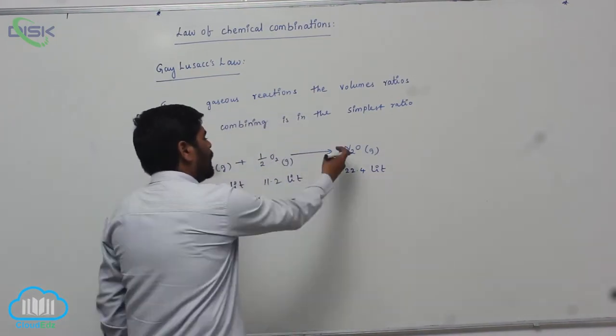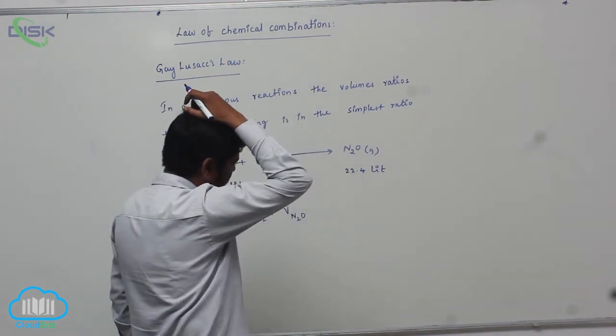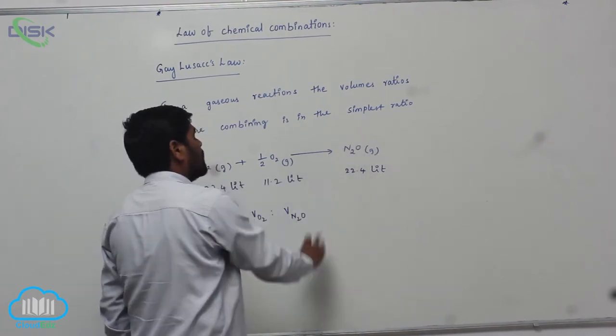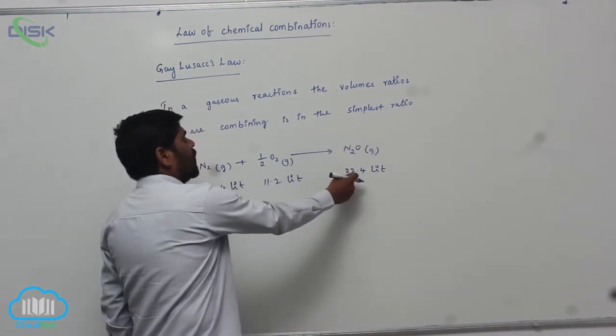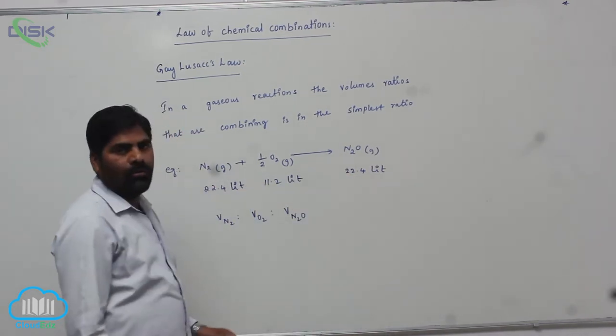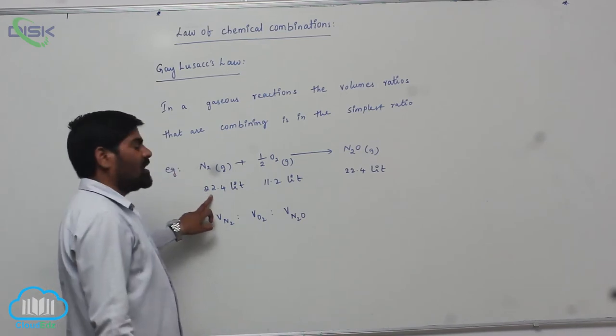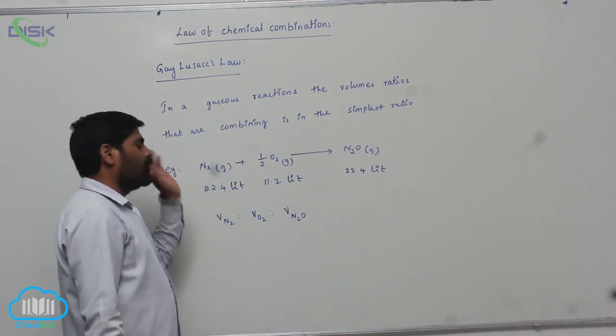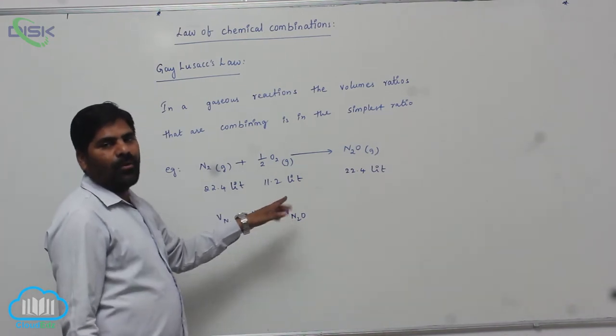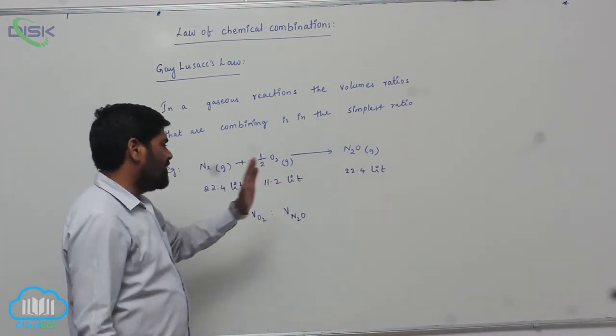Therefore, 28 plus 16 is 44. So 60 grams of nitrous oxide occupied volume is, it is one mole, it is half mole, it is one mole. One mole of any gas occupies 22.4 liters. Half mole is 22.4 by 2, therefore it becomes 11.2 liters.